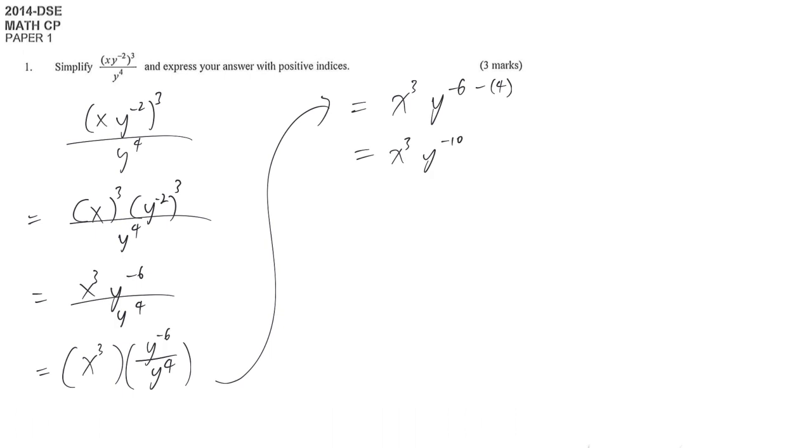And finally, we don't accept negative index. You need to express in positive index. So this is 1 divided by y power of 10. Positive index means times, while negative index means divided by y power of 10.